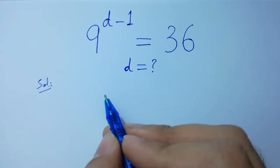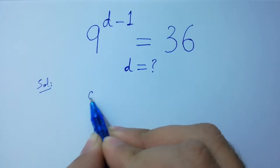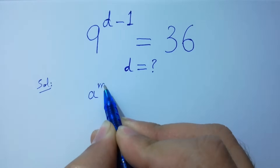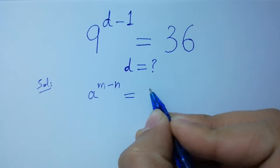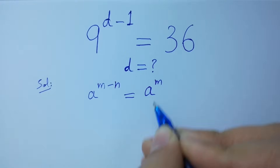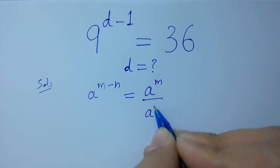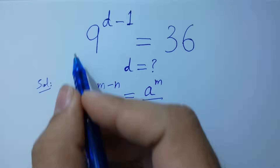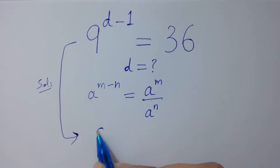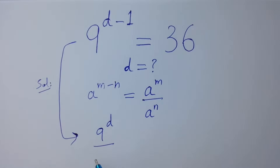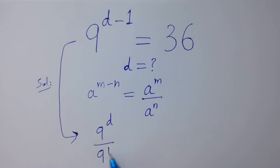As we know that a to the power m minus n equals a to the power m over a to the power n. So we have 9 to the power d over 9 to the power 1 equal to 36.